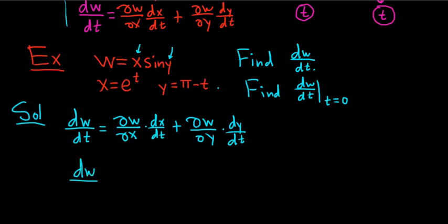So dw dt, this is equal to. So let's see, del w del x. So we're taking the partial of w with respect to x. So all of the y's are constants. So the derivative of x is one, so we just get sine y. All right, because it's a constant, right? The derivative of x is one. And then dx dt. Well, that's the derivative of e to the t with respect to t. That's just e to the t plus del w del y.